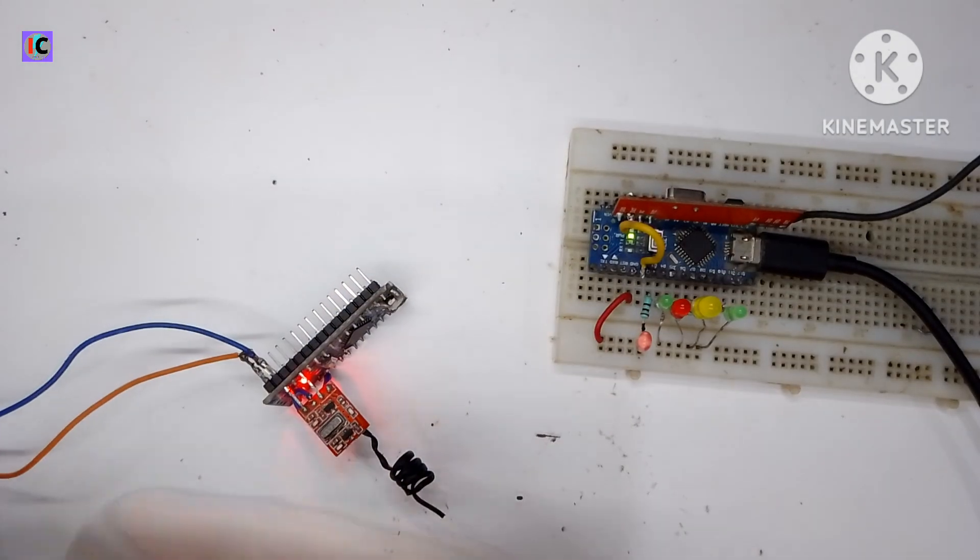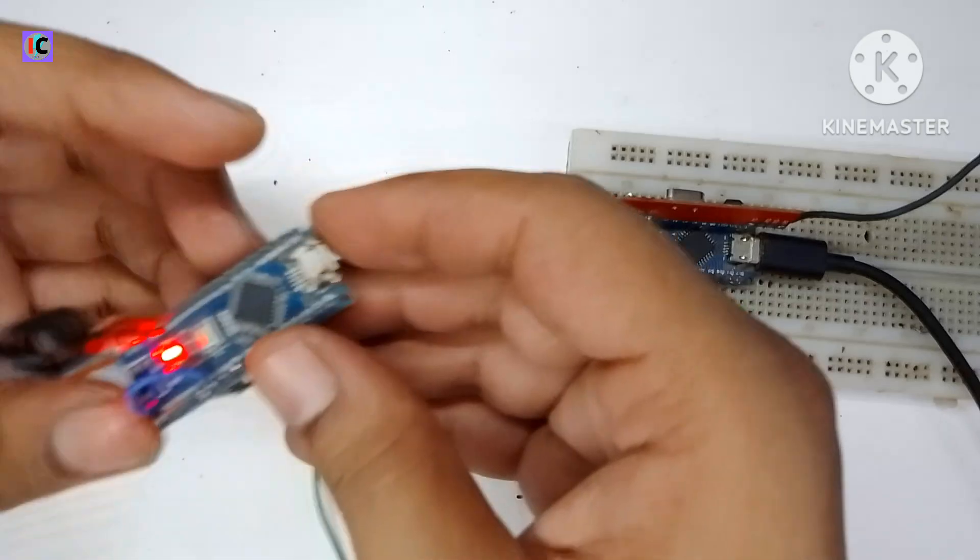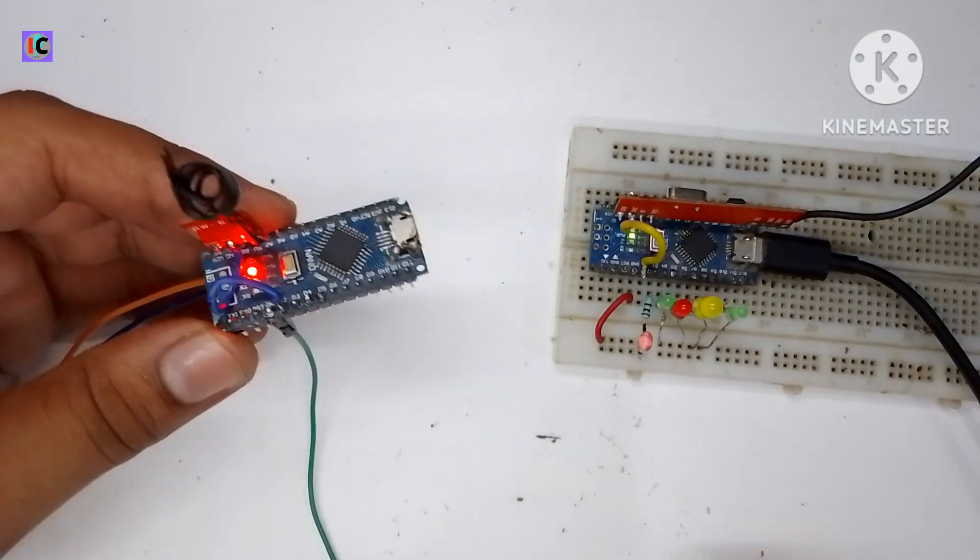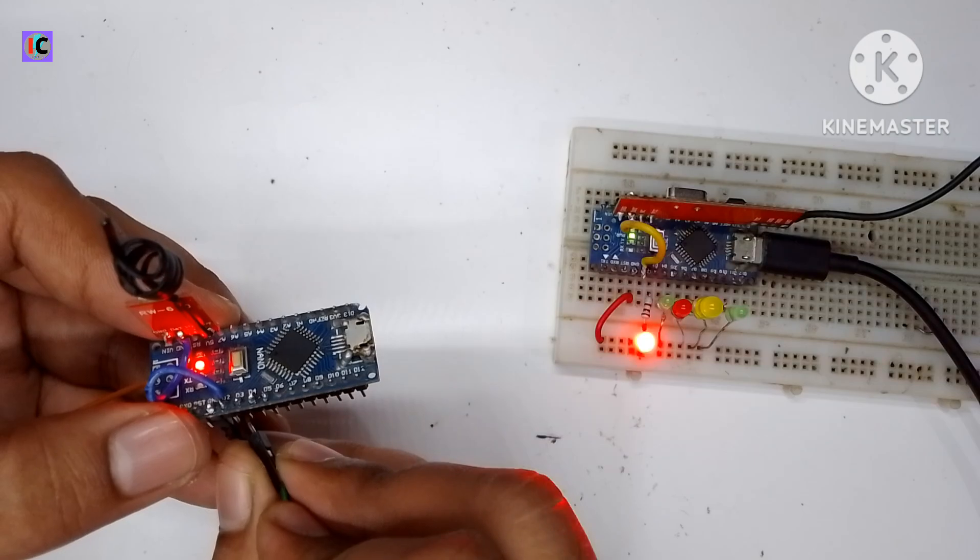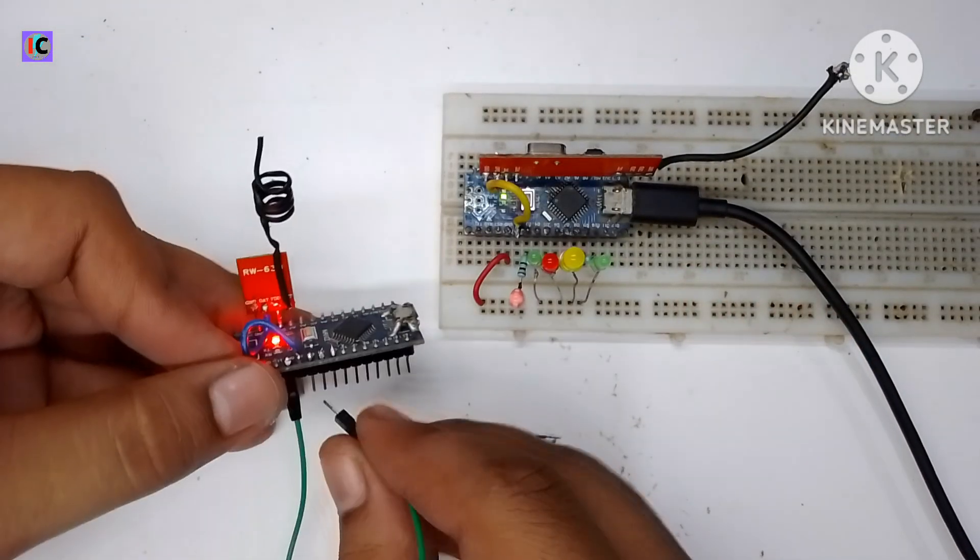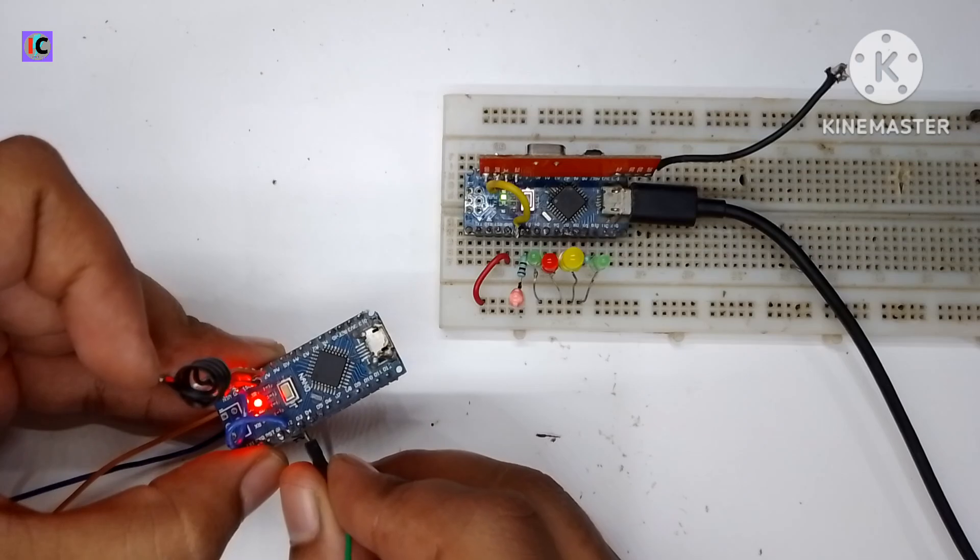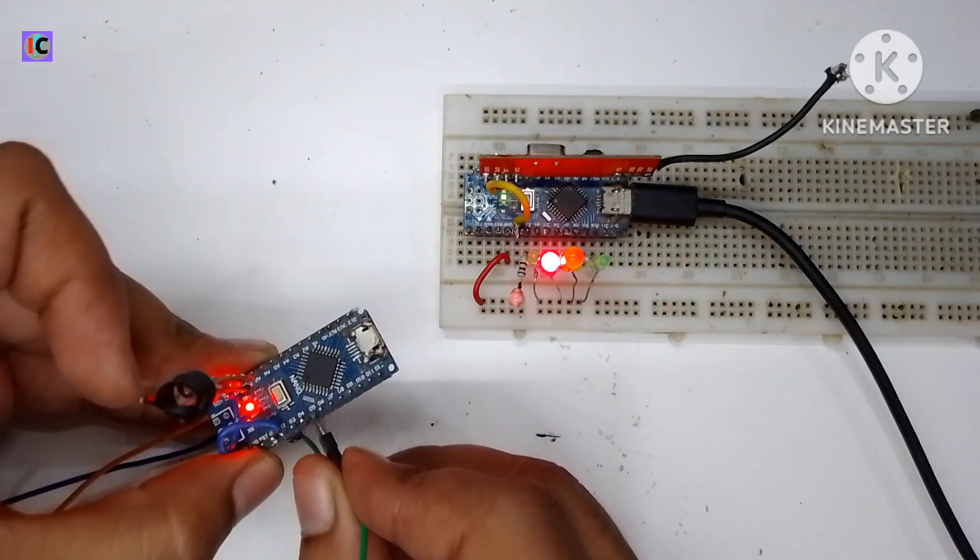Now the transmitter and receiver automatically connected with each other. You can see I'm connecting the ground cable in the Arduino ground pins. When I touch the respective pins like digital pins 2, 3, 4, 5, and 6, the respective LED will turn on at the receiver side.